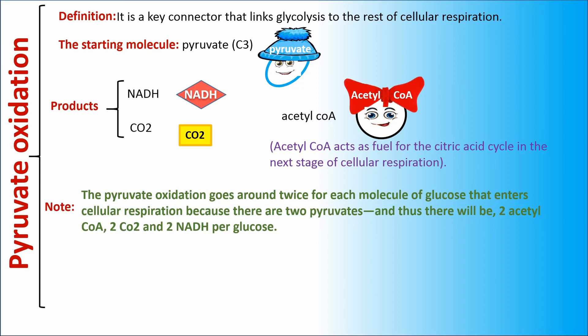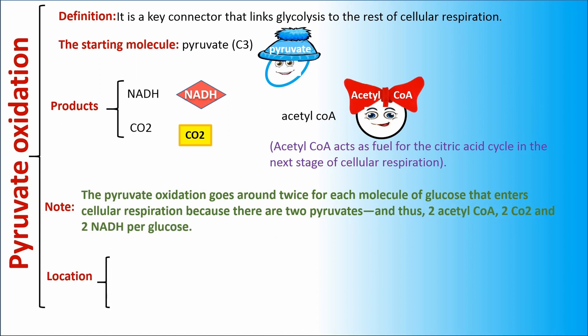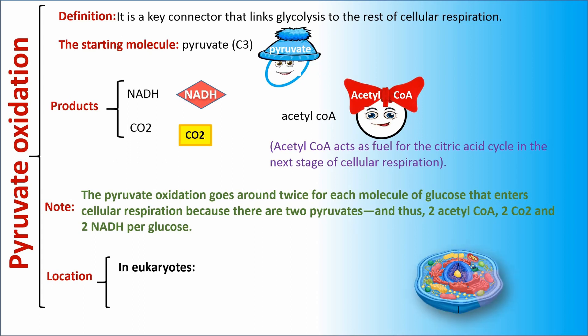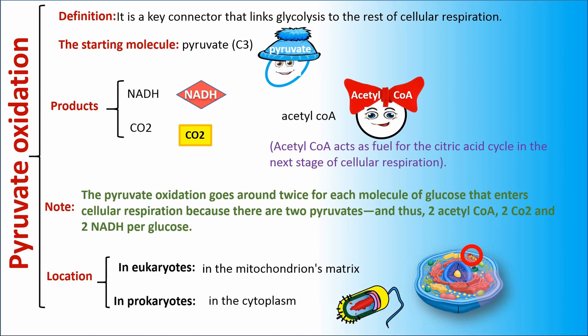Pyruvate oxidation goes around twice for each molecule of glucose that enters cellular respiration, because there are two pyruvates — and thus there will be two acetyl-CoA, two CO2, and two NADH per glucose. Pyruvate oxidation occurs in eukaryotes in the mitochondrial matrix and in prokaryotes in the cytoplasm.